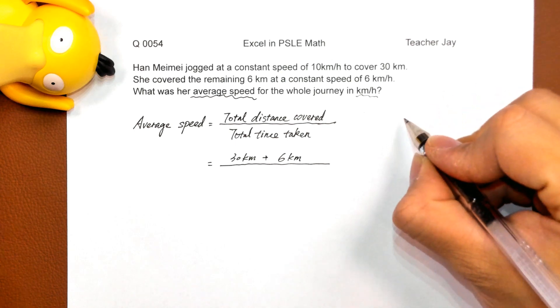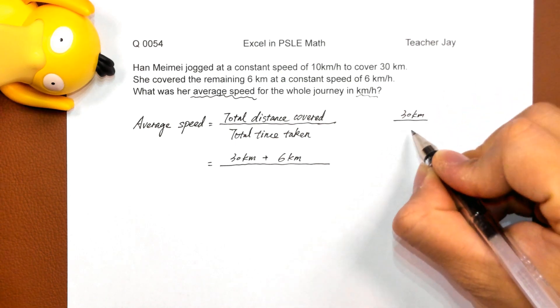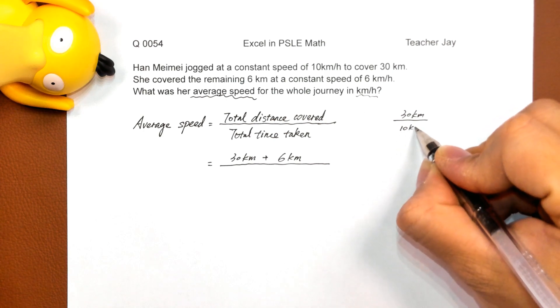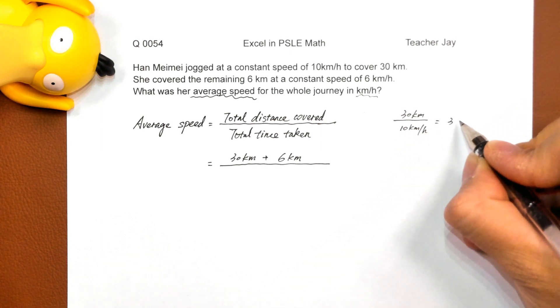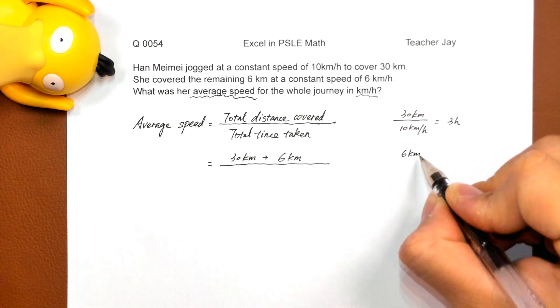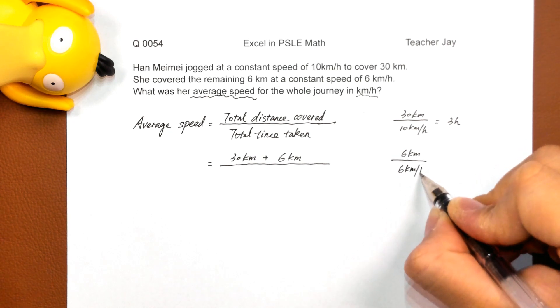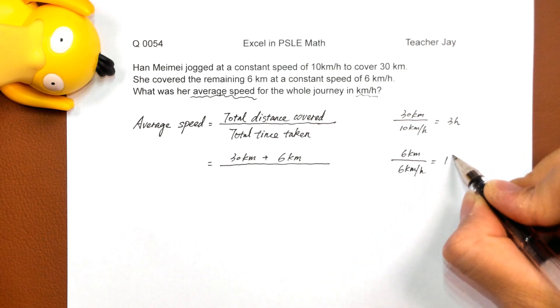By the time taken, 我们的第一段是三十个千米。速度是10 kilometers per hour。所以说她花费的是three hours. And for the remaining six kilometers divided by six kilometers per hour, no, no, one hour.